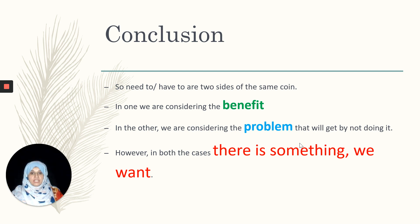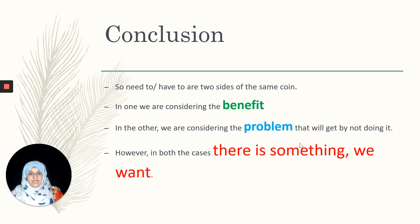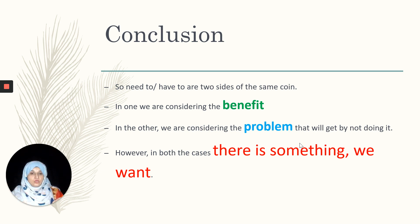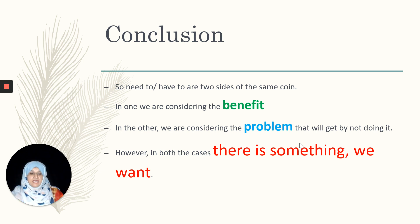In both cases there is something which we want to do — either for the sake of benefit or to avoid a problem. In the case of benefit we make use of 'need to,' and in the case of problem we make use of 'have to.'